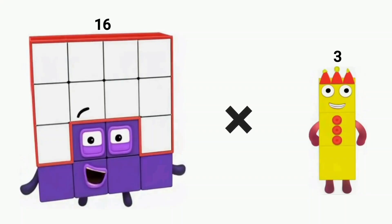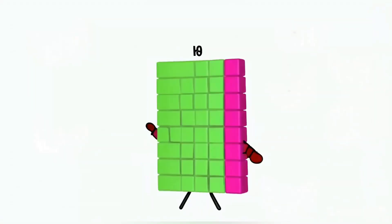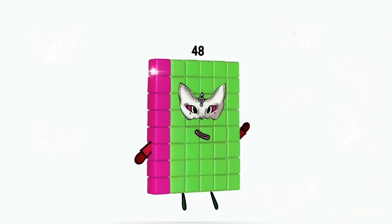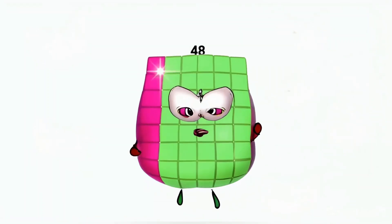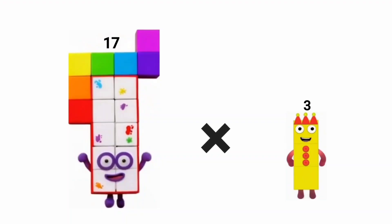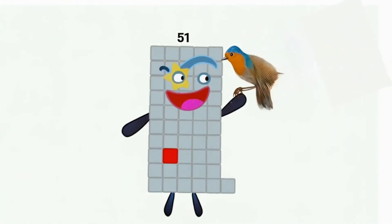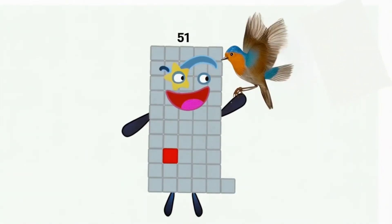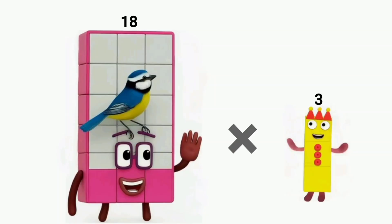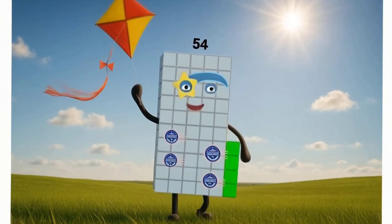16 times 3 equals 48. 17 times 3 equals 51. 18 times 3 equals 54.